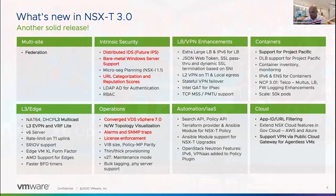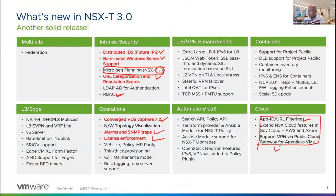The public cloud gateway introduced in 3.0 can now be used for VPN termination — Layer 3 VPN termination with BGP over that Layer 3 VPN, supporting up to 10 Gbps throughput. This is very important: customers deploying in Azure or AWS don't need to buy any third-party VPN server. They can use the same public cloud gateway already deployed for managing cloud instances, and use it for VPN as well.